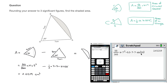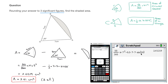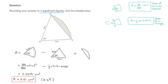Rounding to three significant figures, I look at the fourth significant figure, which is 2. Since 2 is less than 5, I don't round up. The area is equal to 2.61 square centimeters, rounded to three significant figures. This method — sector area minus triangle area — will always work when calculating the area of a circular segment, so make sure to keep it in mind.